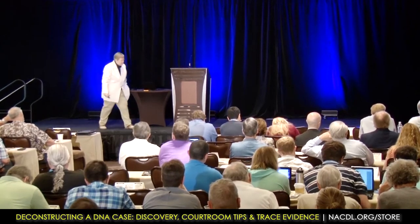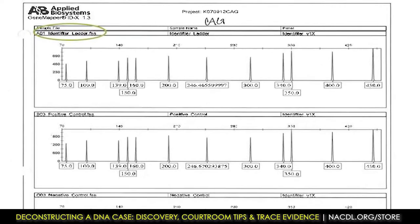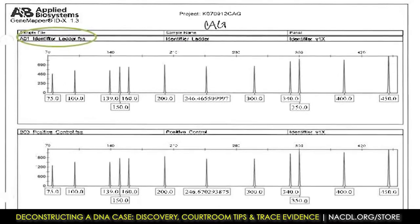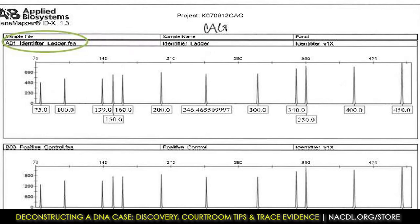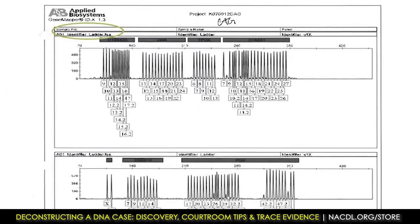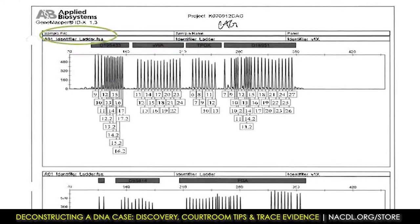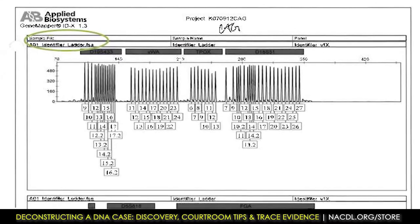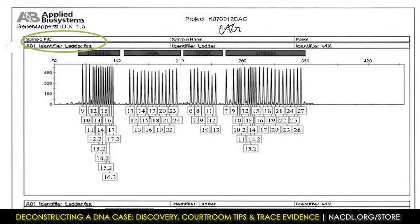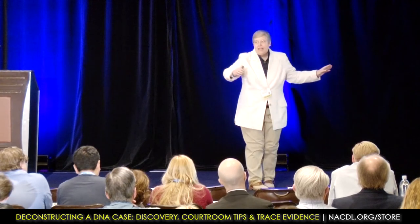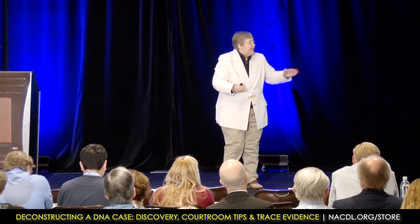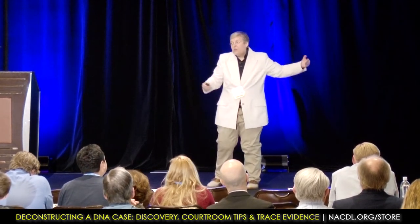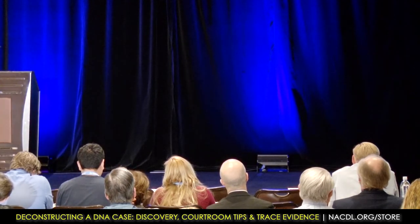Let's go to some electropherograms. This is just a very simple electropherogram—you should have one of these in every case. This is a ladder. If they don't give you a ladder, there's a problem. You always want a ladder, a positive control, and a negative control. A ladder is simply what the company that produces the kits makes so we know what the possible alleles are for any one location or locus. We do this for every run to make sure that all the alleles at all of the loci are coming up correctly. If there's a deviation, it will be called OL—an off-ladder allele—meaning there is a peak that does not fall in the ladder range, which could be a problem.